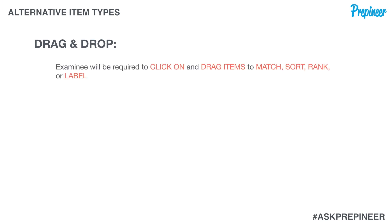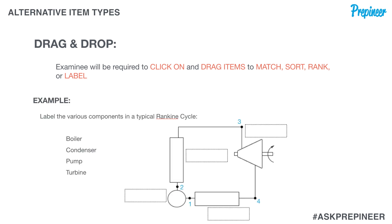A drag-and-drop question requires test takers to click and drag items to match, sort, rank, or label. Here's a potential example: a typical rank-and-cycle question that says 'label the various components in a typical rank-and-cycle.' You have the components listed to the left, and as the user you will click on each component and drag it over into the correct position within the diagram.